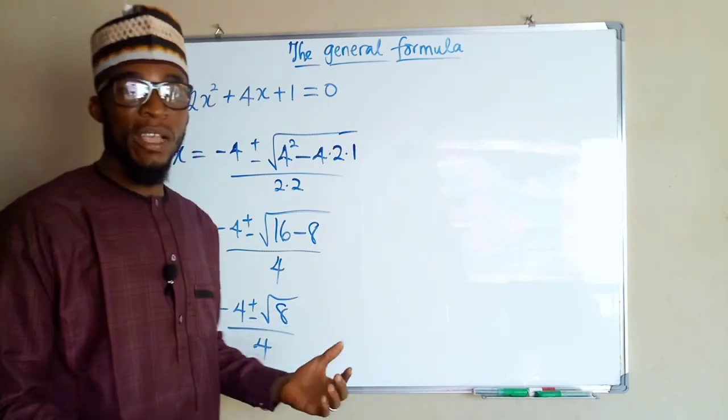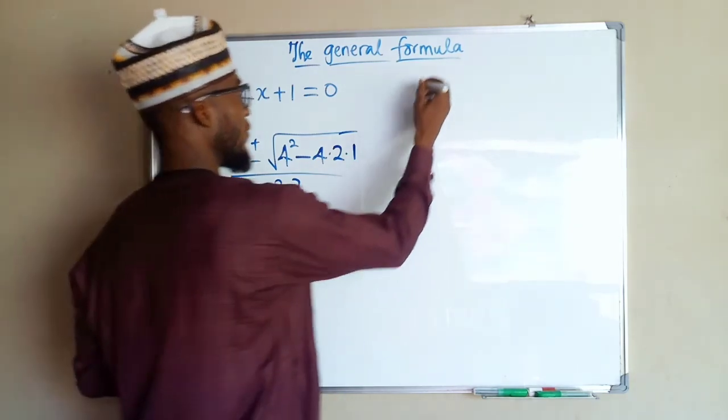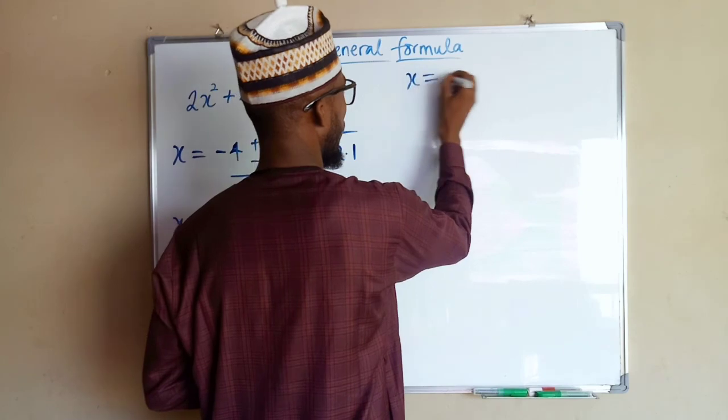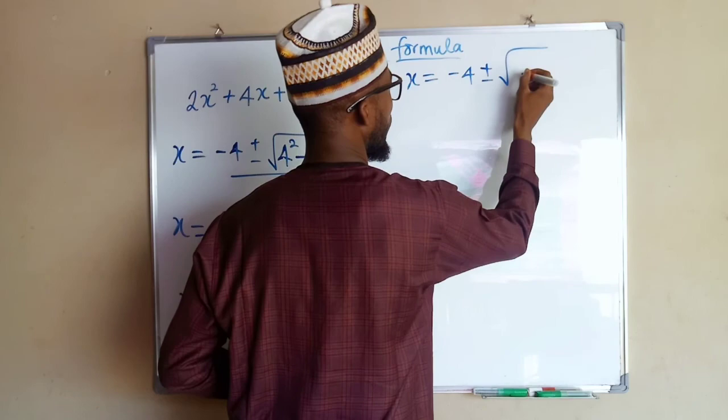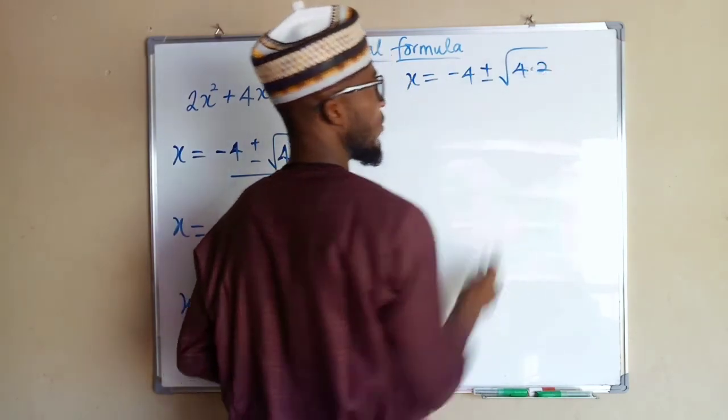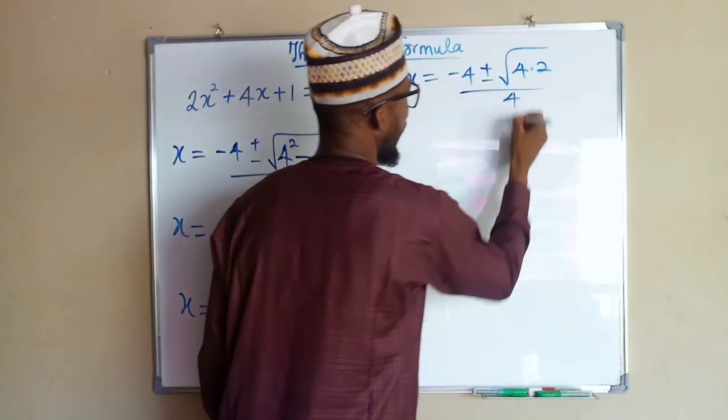So it can be written as 4 times 2. So we have x equal to minus 4 plus or minus square root of 4 times 2, divided by 4.